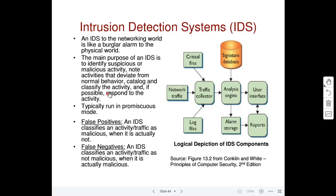The IDS notes activities that deviate from normal behavior, then does some log bookkeeping — it stores a log of all activities that happen during a certain period of time. The admin can look at those log files and classify whether they are good or bad. Based on this classification, the IDS rule set could be updated.